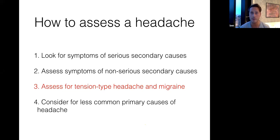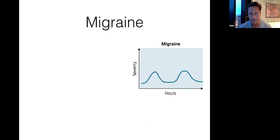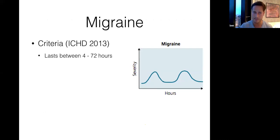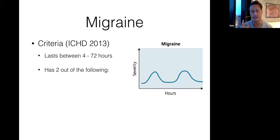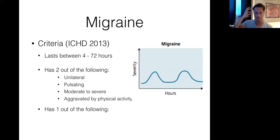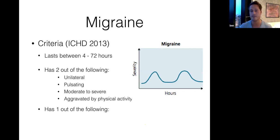Moving on to primary headaches. If you've ruled out serious and non-serious secondary causes, does this patient have a primary headache disorder — tension type or migraine? Migraine is a recurring severe headache disorder that can be quite disabling. According to the international classification of headache disorders, the headache lasts between 4 and 72 hours, though most attacks last about one day. It needs two of the following: unilateral — the word migraine comes from the Greek hemicrania, half your head — pulsing, moderate to severe, and aggravated by physical activity, even walking around the house.